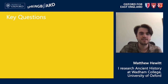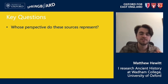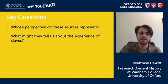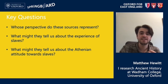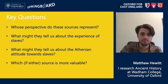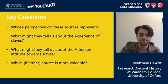The key questions I want you to think about are: first of all, whose perspective do these sources represent? Second, what might they tell us about the experience of slaves? Third, what might they tell us about the Athenian attitude towards slaves — that is, the attitude of slave owners towards slavery? And finally, is either of these sources more useful than the other?